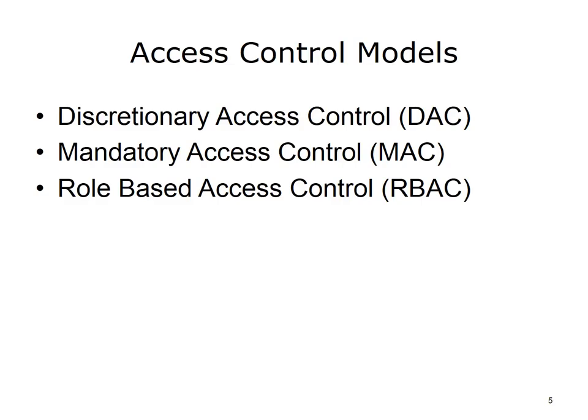Role-based access control, RBAC, is access based on the role a person plays in an organization. Access is given to a particular role inside of an organization and then users are associated with those roles, inheriting the access from that role. For example, we might create a role of receptionist in a medical practice, figure out what access a receptionist needs, and assign that access to the role. Then we would associate all receptionists with that role. If a receptionist leaves the practice, we simply disassociate her user account with the role and she now has no access.